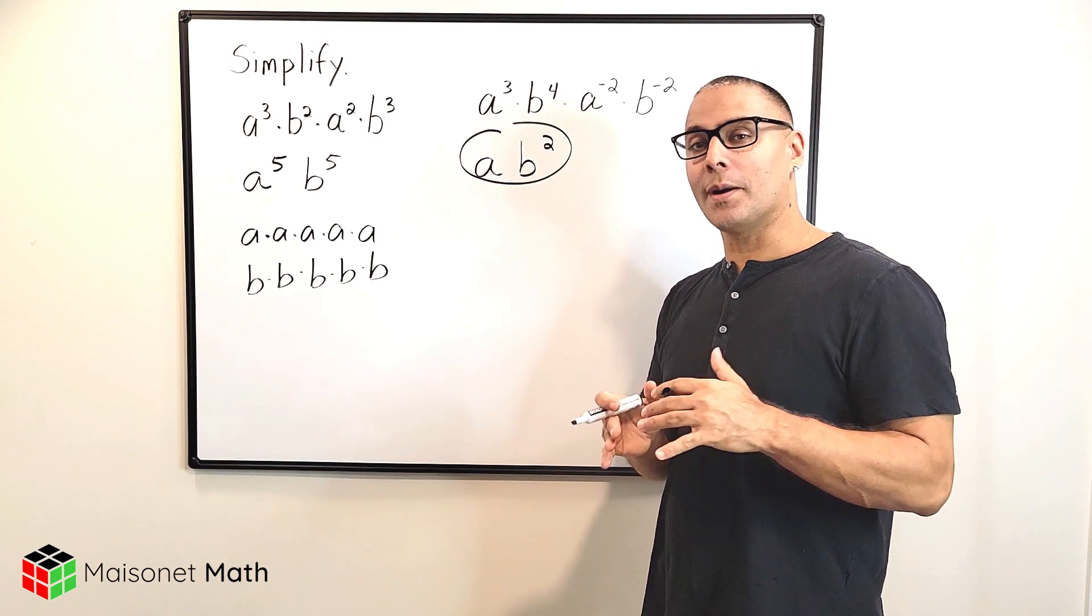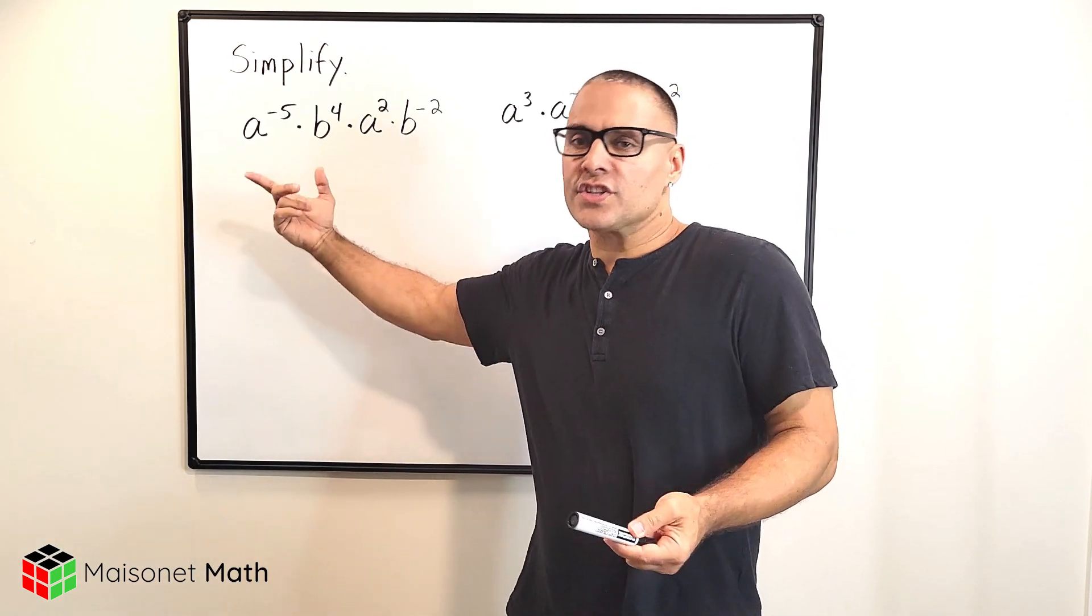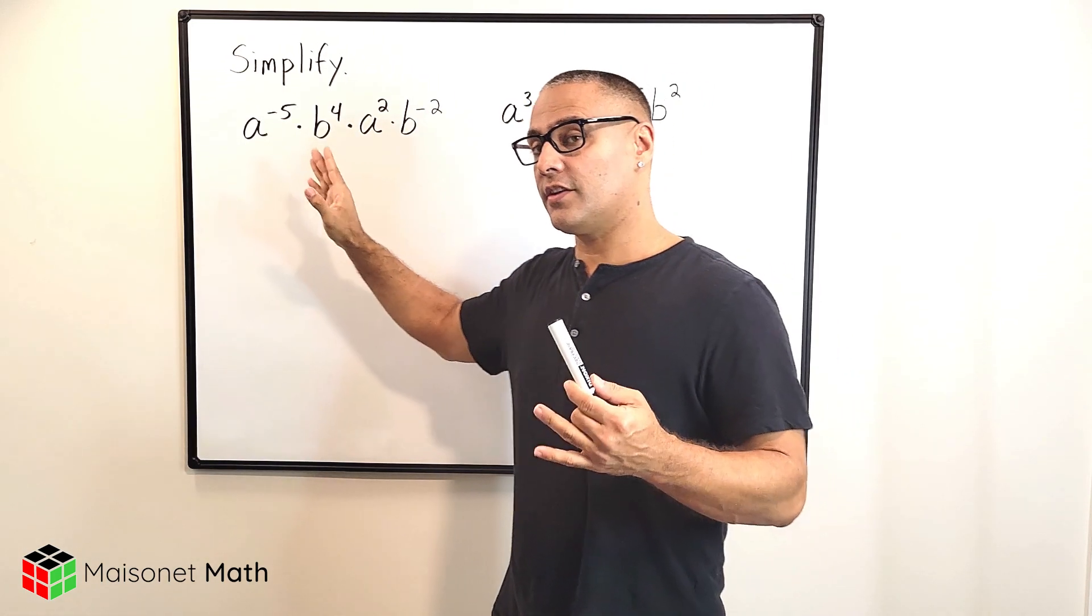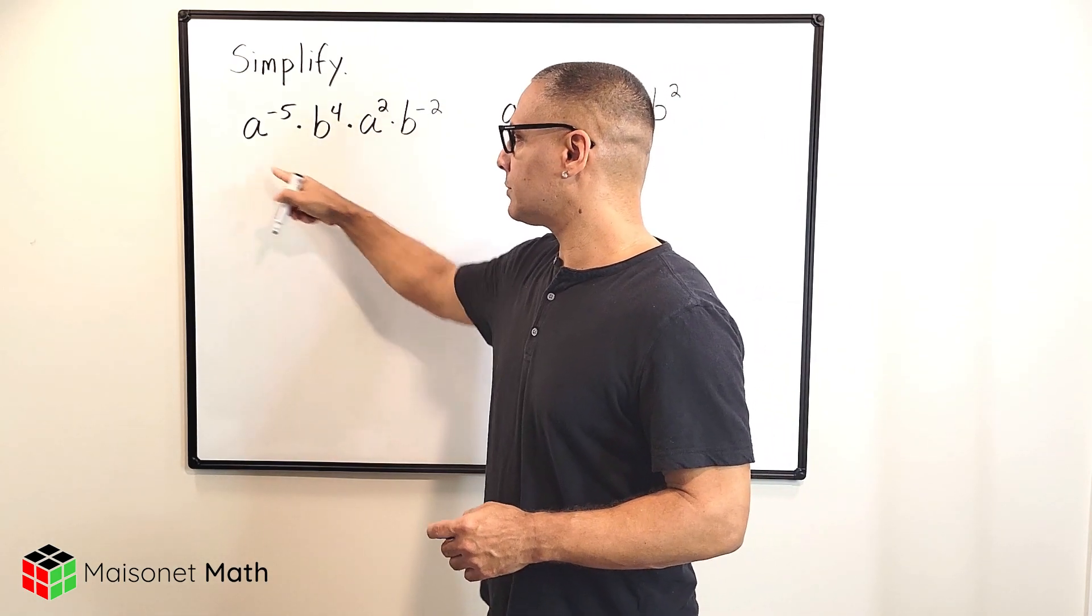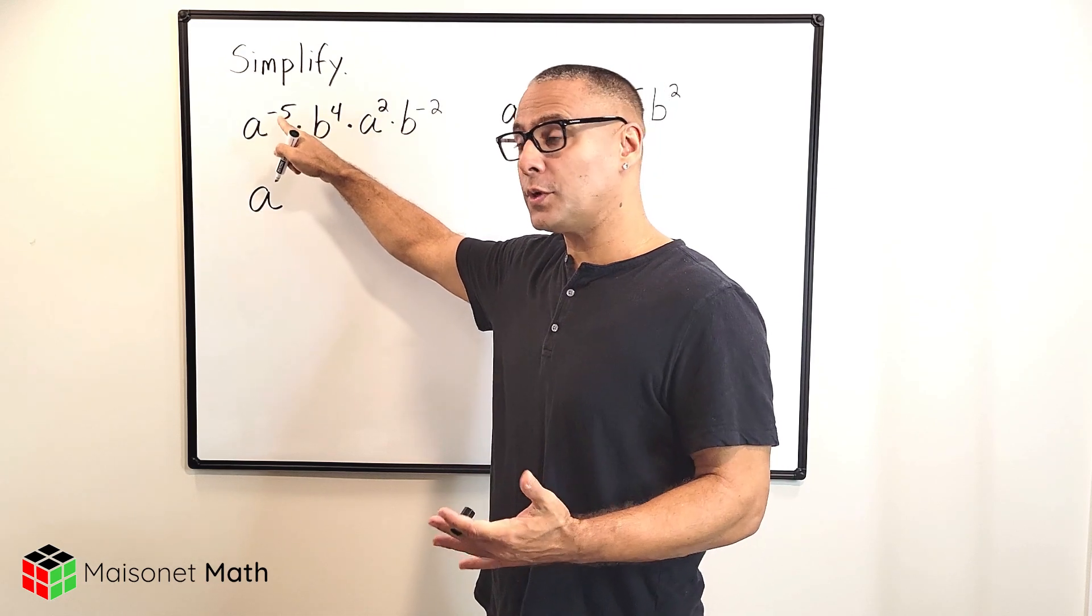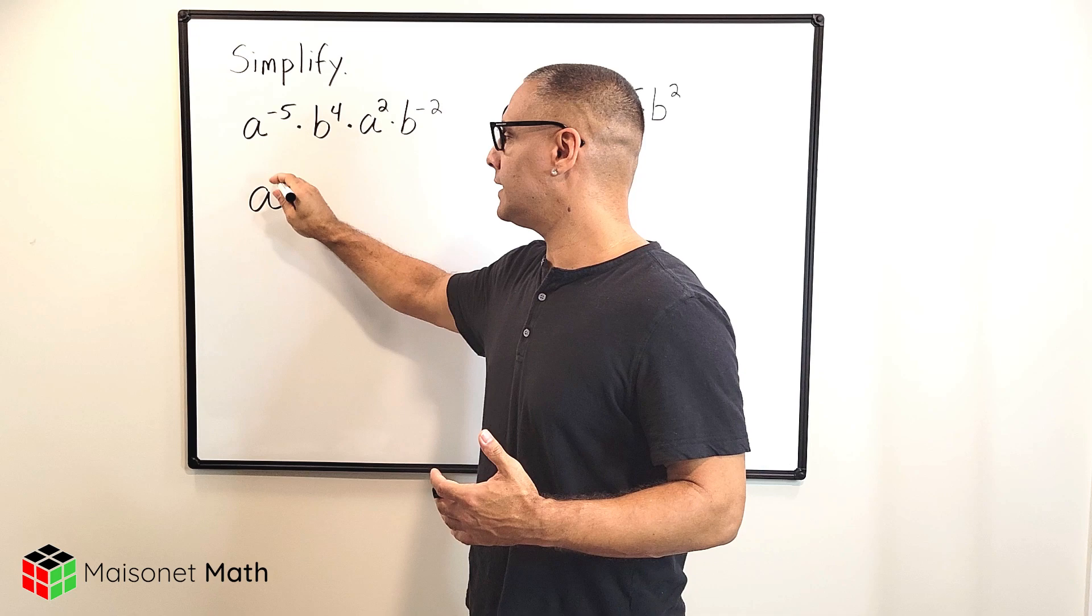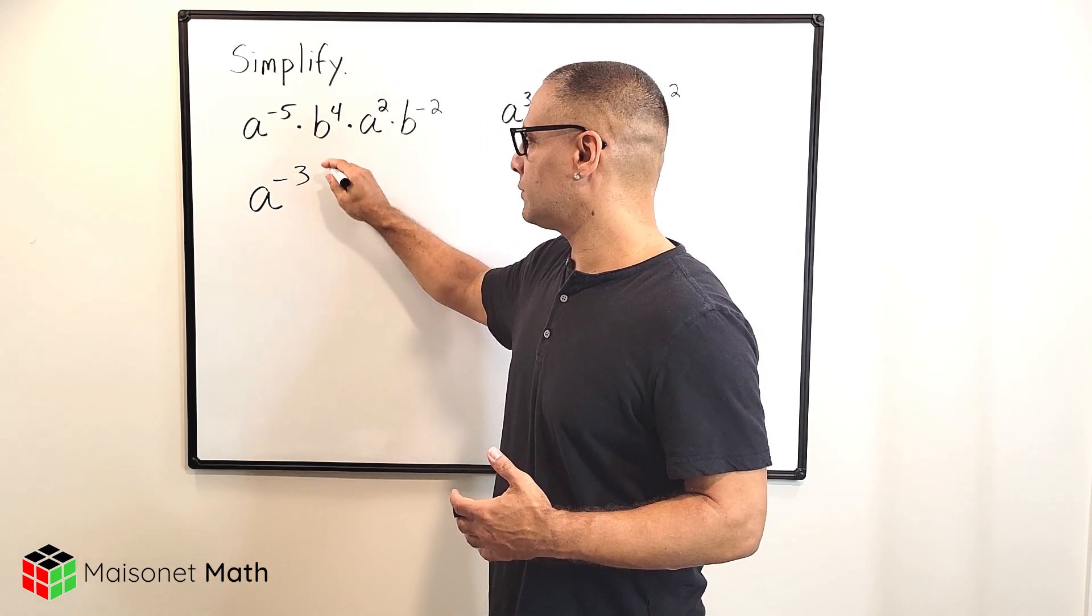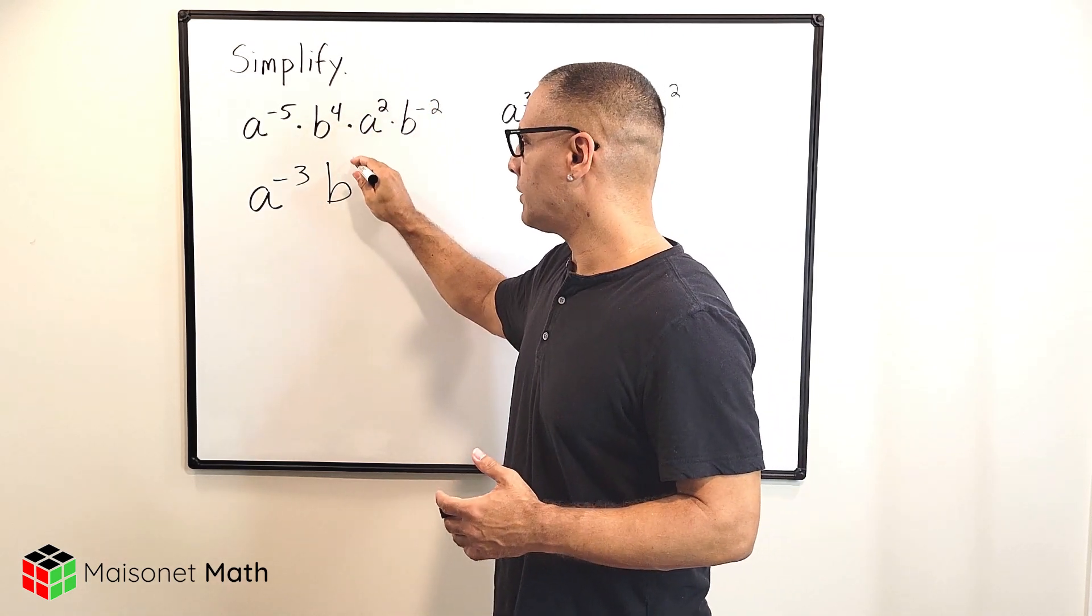Alright, let's go ahead and do a couple more examples. We have another expression here where we're just multiplying a bunch of variables. So once again, all we do is take the variables that are the same and just add their exponents. So let's start with multiplying the a's together. We have negative five for this exponent and positive two for this exponent. And when you add those together, you get negative three. And when you multiply the b's together, we have to add the exponent of four and negative two, which gives us positive two.